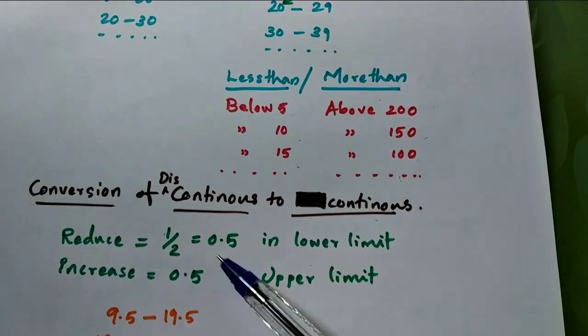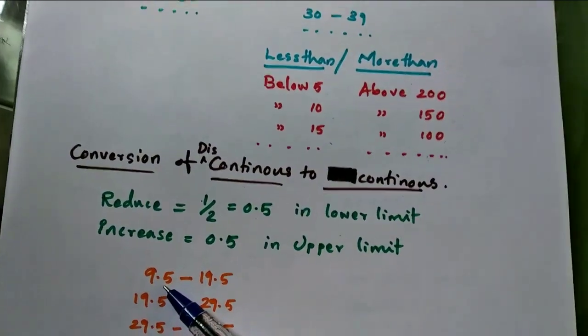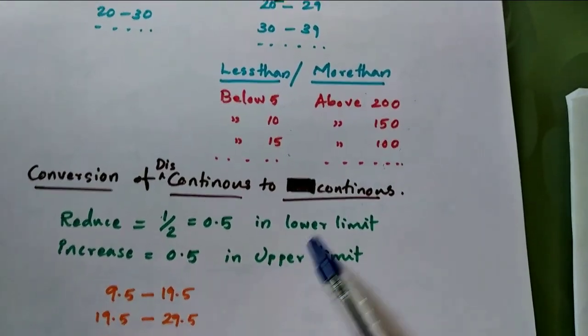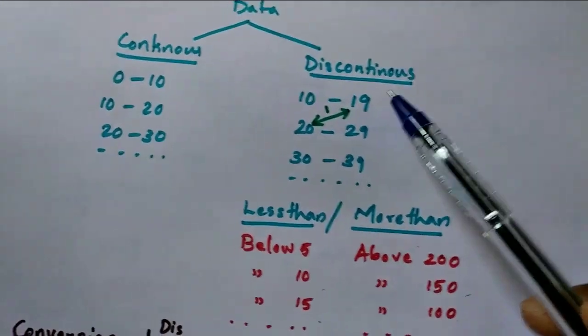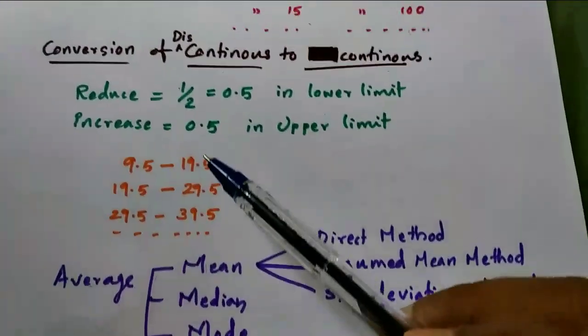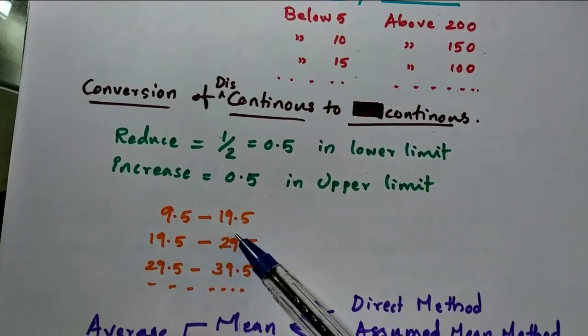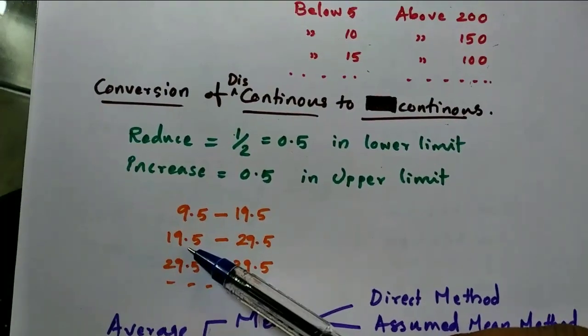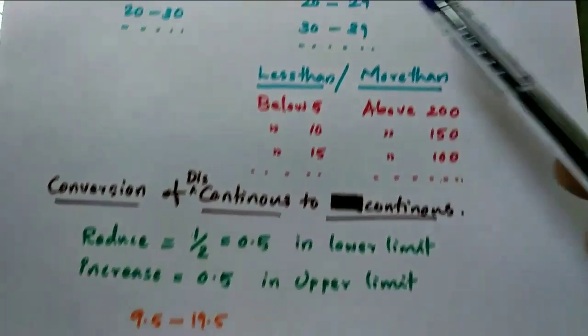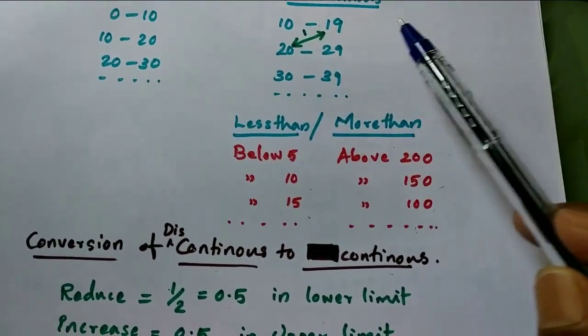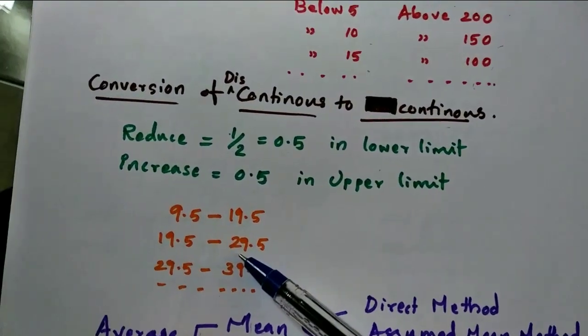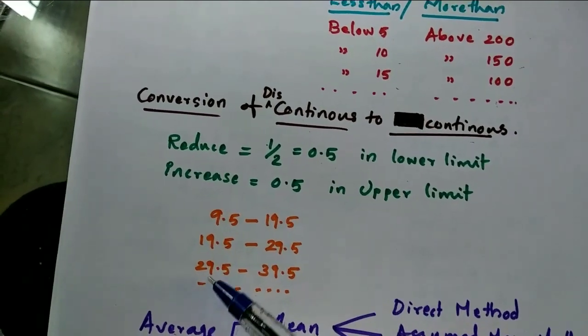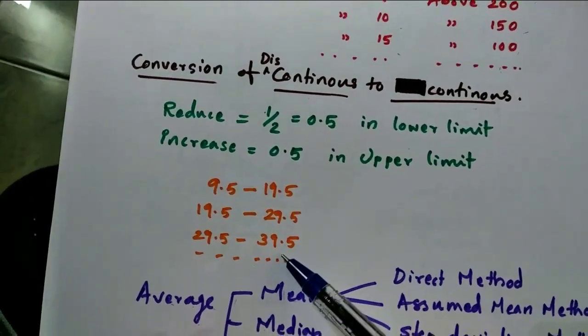Also increase 0.5 in the upper limit of the first interval, which is 19. So 19 + 0.5 = 19.5. Same way, 20 - 0.5 = 19.5, and 29 + 0.5 = 29.5. Continue this way to get 29.5 to 39.5, etc. This data becomes continuous.